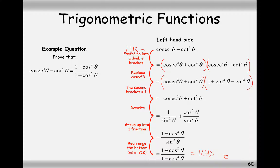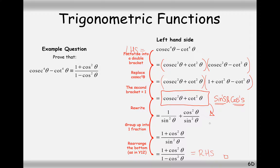In this proof we started by factorizing, spotted that one bracket simplified down to 1, which cancelled a lot of the hard work. Then as early as possible, I recommend you turn any tans, cosecs, secs, and cots into sines and cosines. It's much easier to work through the whole proof just in terms of sines and cosines, as we did here. As early on as possible, turn your trigonometric expression into purely sines and cosines.